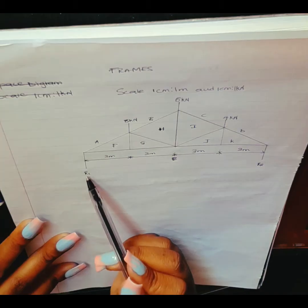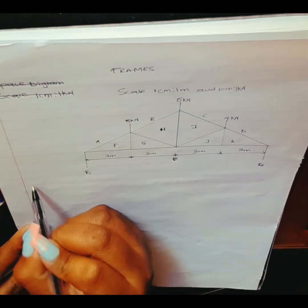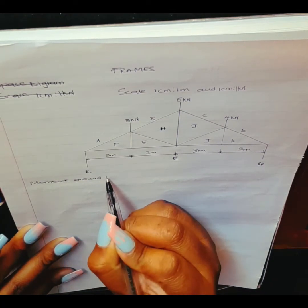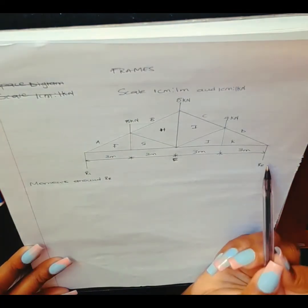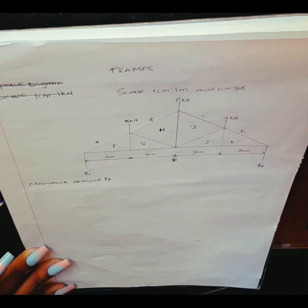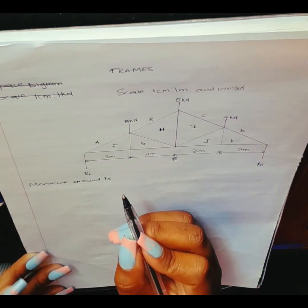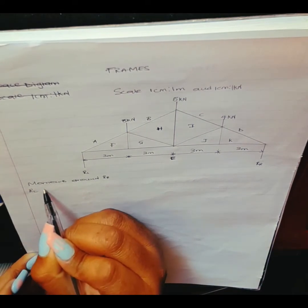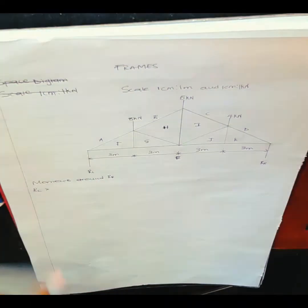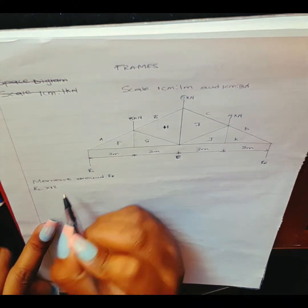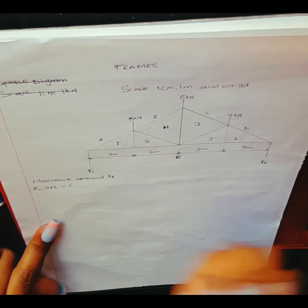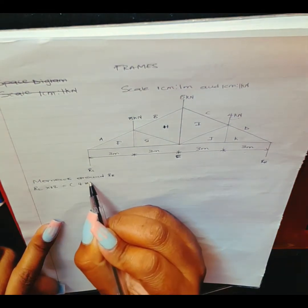To calculate the left-hand reaction, we are going to take moments around RR — that's the right-hand reaction. So we say: RL multiplied by the distance from RL to RR, which is 12. So RL × 12 equals 4 kilonewton × 3.